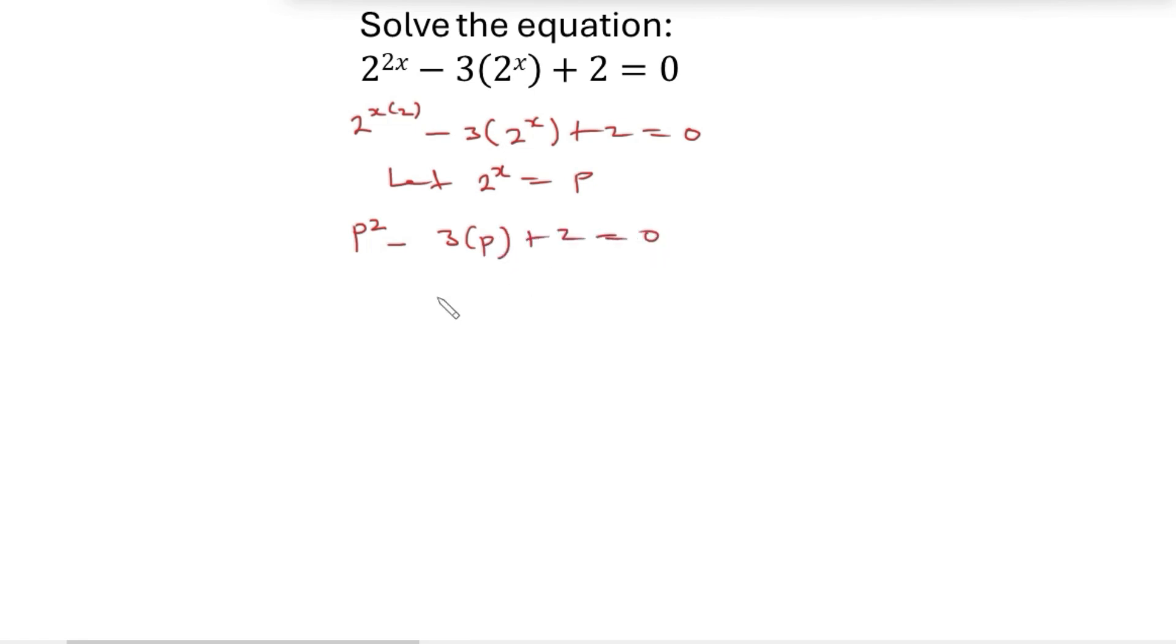So we're going to factorize this. Factorize to find the value of p. Multiply 2 plus 2 and plus p squared—2 times p squared gives you 2p squared. So the factors of 2 are 1 and 2. We can write this one as p and 2p.